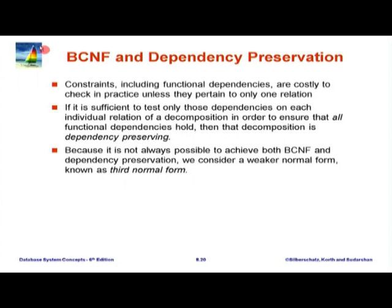Assuming a database enforces functional dependencies, we want to have a schema where all functional dependencies can be checked efficiently. You can always check a functional dependency by joining things back and checking, but what we would like is that on each individual relation in the decomposition we can check functional dependencies, and ideally that is all we need to do. If it is sufficient to test only those dependencies on each individual relation and by doing so ensure all functional dependencies hold, then we say the decomposition is dependency preserving.